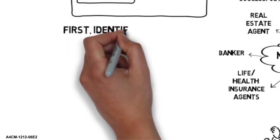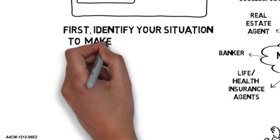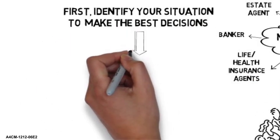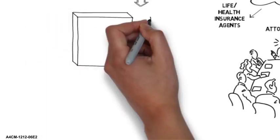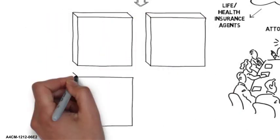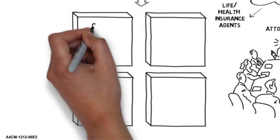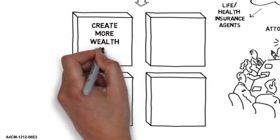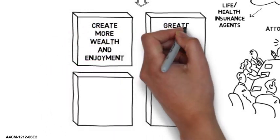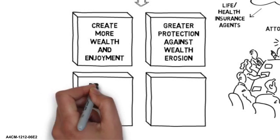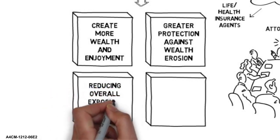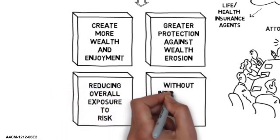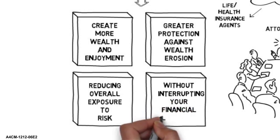What you need to do first is identify your specific situation so you can make the best decisions for you. When working together, we will start with a focus on four initial objectives. We will utilize resources to help create more wealth and greater enjoyment. We will provide better protection against wealth erosion, without adding risk or even often lessening your risk. And all the while, without interrupting your financial lifestyle.